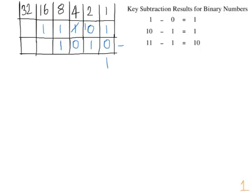With our two twos, two of them take away one of them is going to leave us with one left over, which gives us this result here.